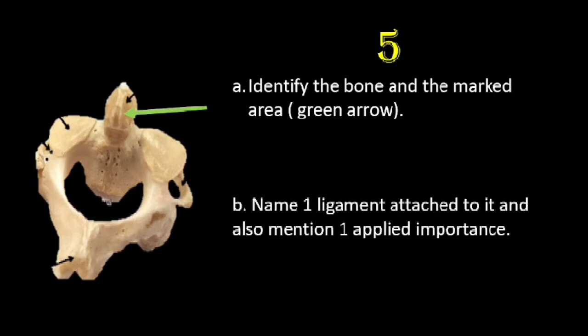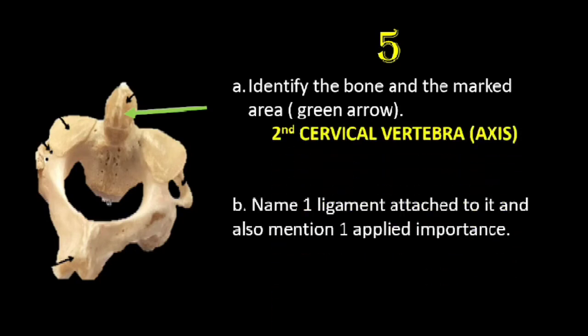The last question for this session is: identify the bone and the area marked by the green arrow, name one ligament attached to it, and mention one applied importance. This is the second cervical vertebra, or the axis vertebra, and the marked area is the odontoid process or dens of the axis.